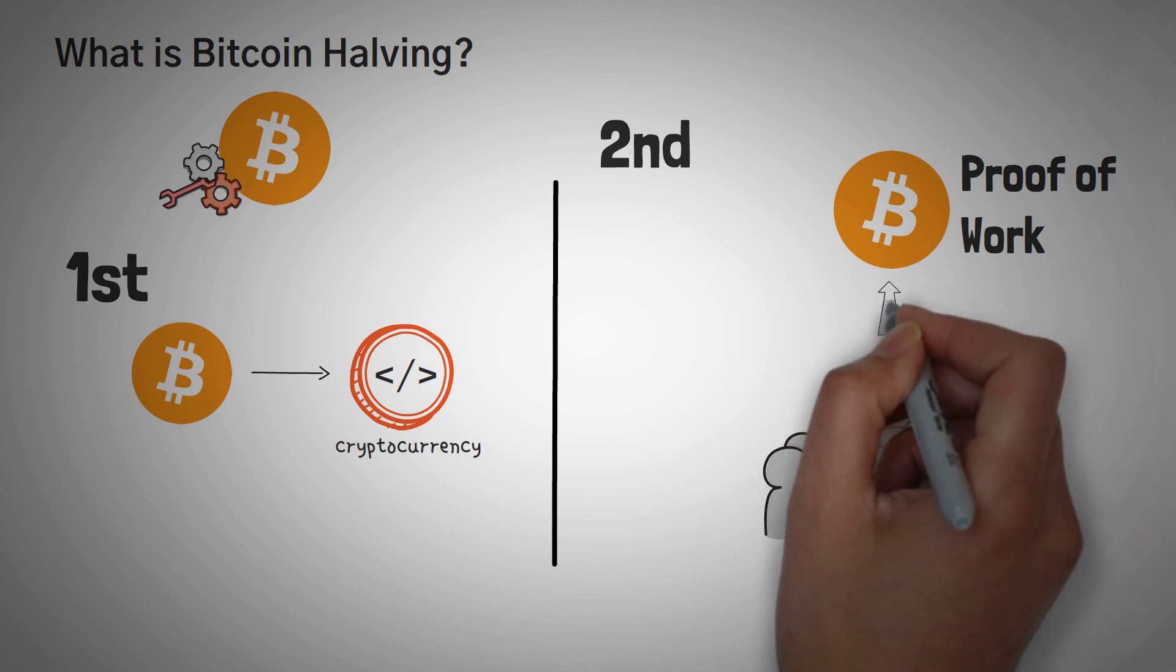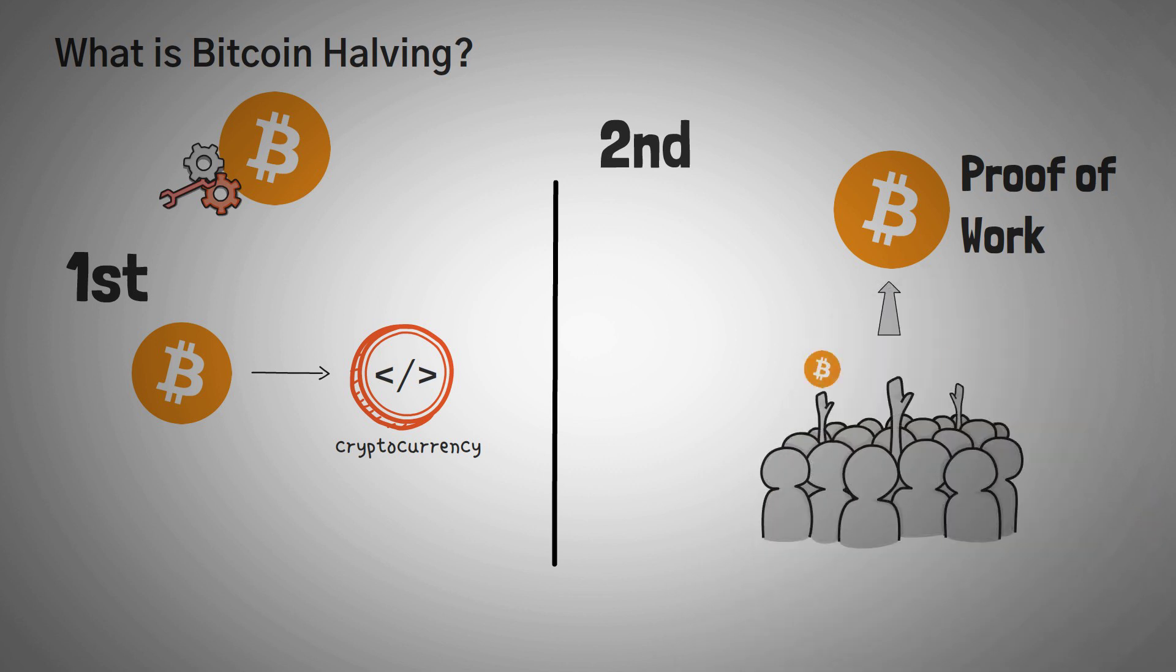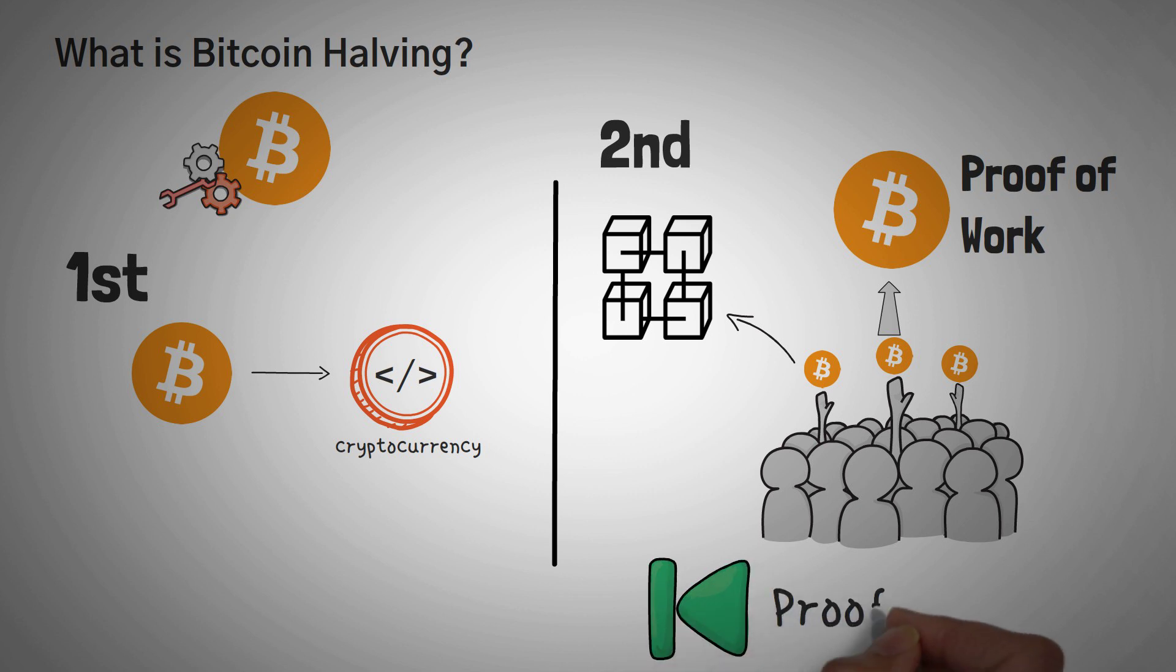And when they win that problem, they get the reward of some Bitcoin. But they also get the reward of getting to add the next block to the blockchain. If you don't know what this means, and if you want to learn more, we actually have a specific video about proof of work, including what the specific problem that they're solving is.